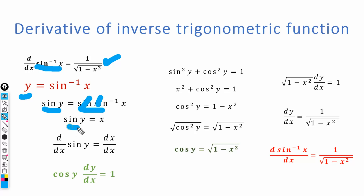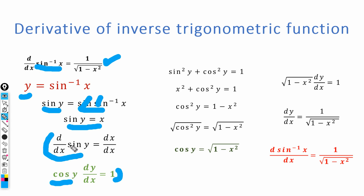Now if we take the derivative of sine y is equal to x, we have d by dx of sine y is equal to dx by dx. The derivative of x becomes 1, and the derivative of sine y is cos y, multiplied by dy by dx. So we have cos y times dy by dx is equal to 1. This is equation number 1.